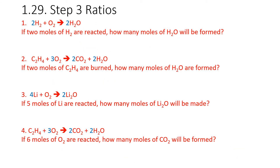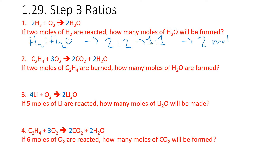Okay, step 3 — the ratios. This is where people often slip up. For these ratio questions, all we're doing is looking at the big numbers in front of the species in the reaction, highlighted in blue. For question 1, you've got 2H2 plus O2 goes to 2H2O. The question asks: if we have 2 moles of H2, how many moles of H2O will be formed? The ratio between H2 and H2O is 2 to 2, which is 1 to 1. Therefore, if we react 2 moles of H2, we produce 2 moles of H2O.